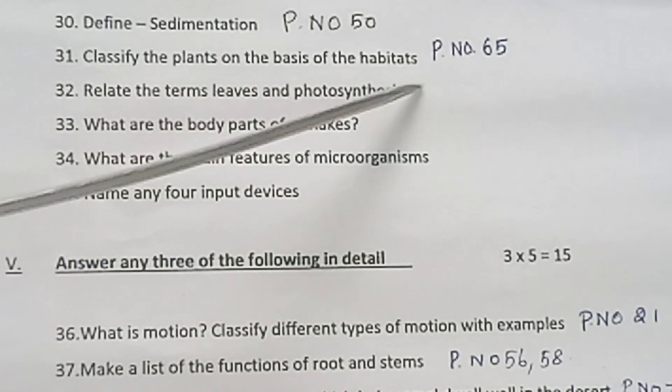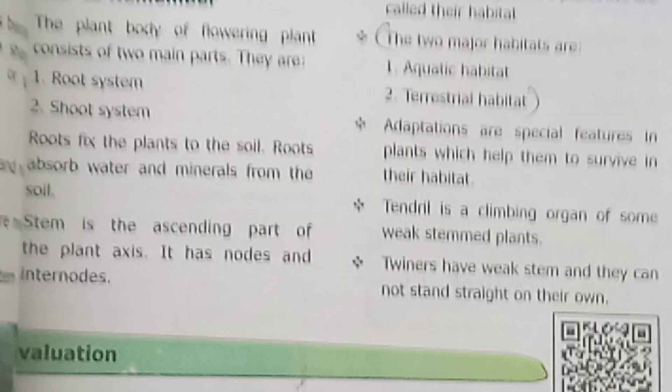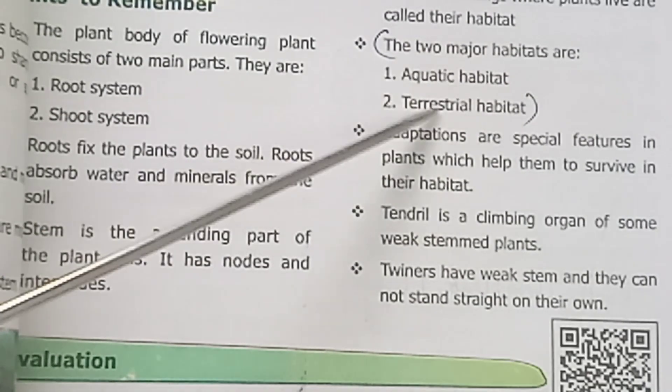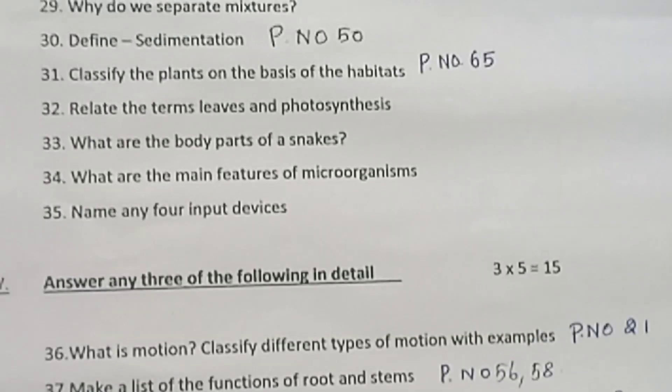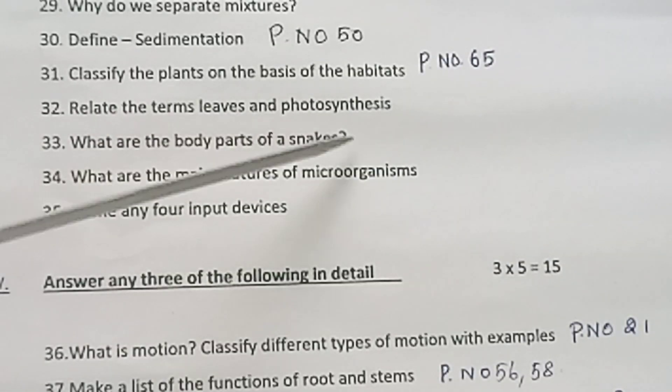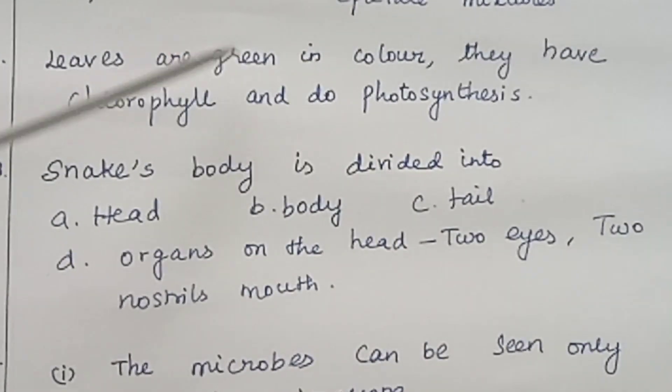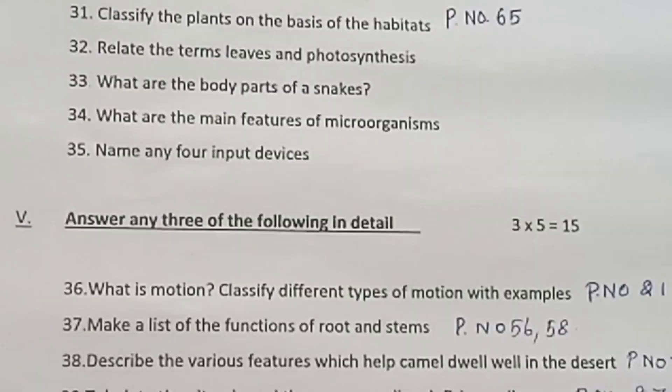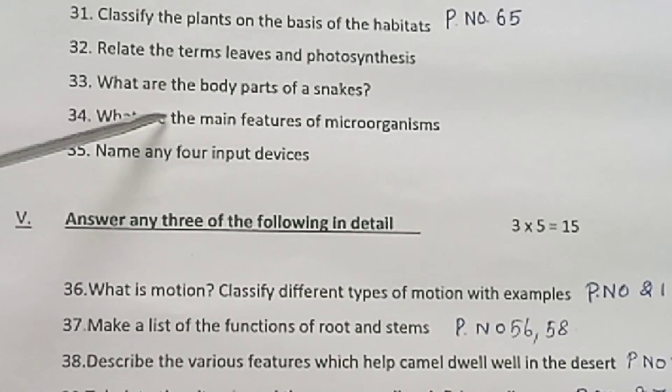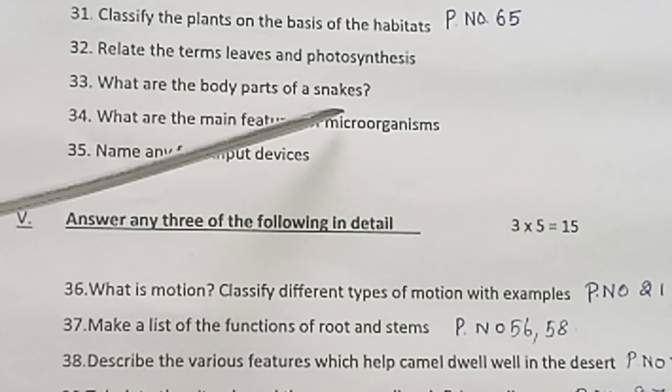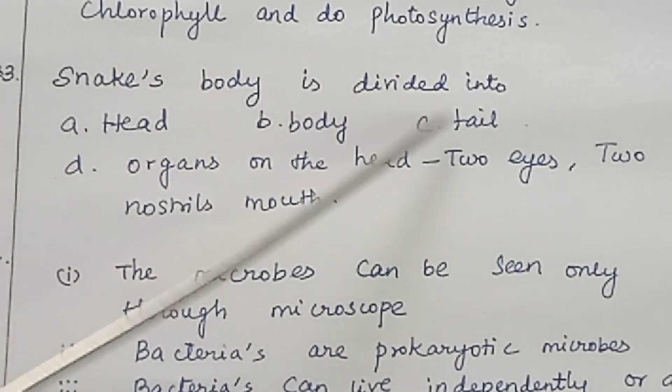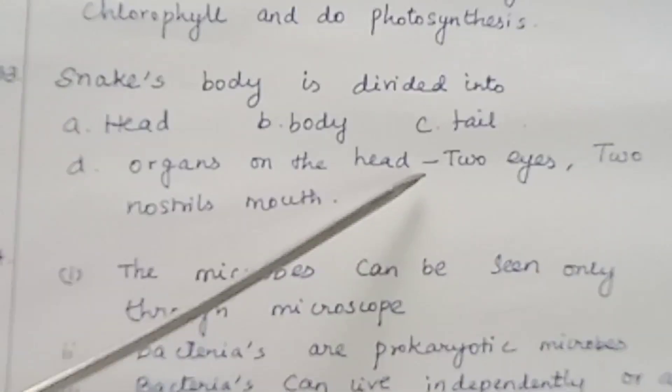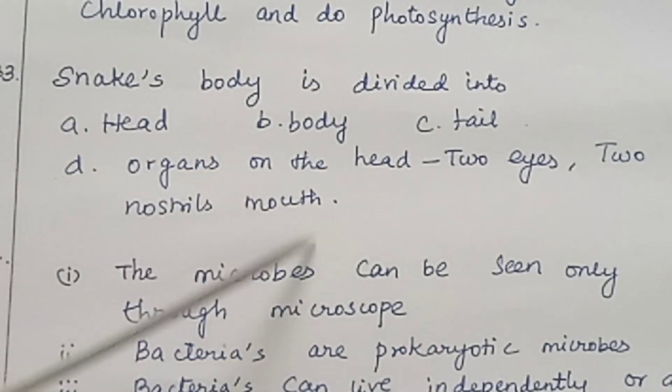Question 31. Classify the plants on the basis of their habitats. Page number 65. The two major habitats are aquatic habitat and terrestrial habitat. Question 32. Relate the terms: Leaves are green in color. They have chlorophyll and do photosynthesis. Question 33. What are the body parts of snakes? Snake's body is divided into head, body, tail. The organs in the head: two eyes, two nostrils, mouth.